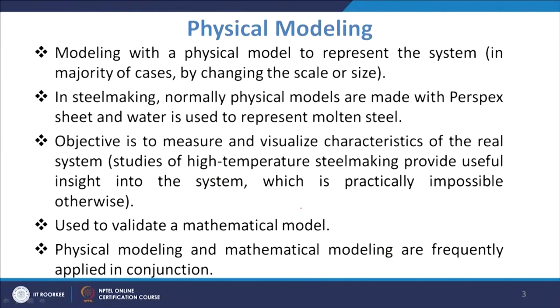Coming to physical modeling: modeling with a physical model represents the system, in the majority of cases, by changing the scale or size — normally reducing it. For example, if in industry you have a tundish of 2 to 3 meters in length, you can have a reduced scale physical model of 1 meter length, because handling a larger vessel would be problematic. We make smaller models, but accordingly many things need to be changed, which we will discuss later.